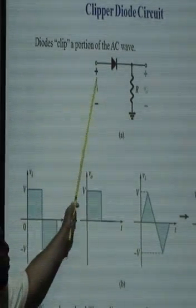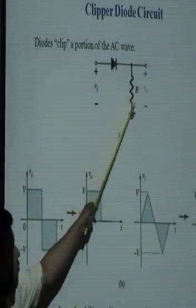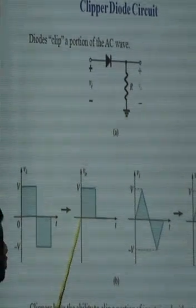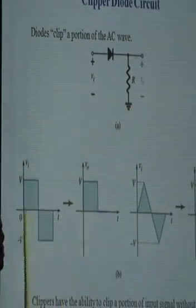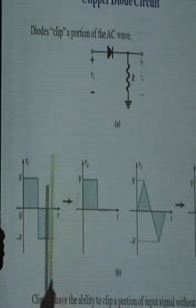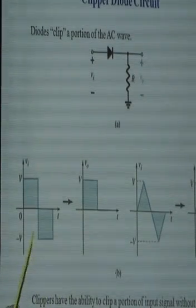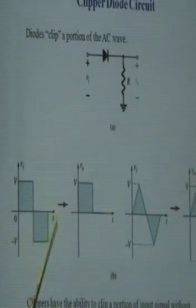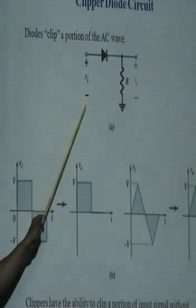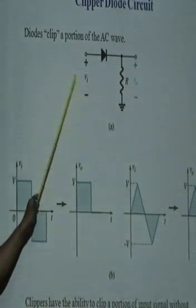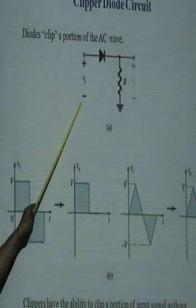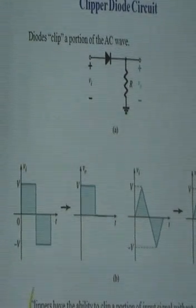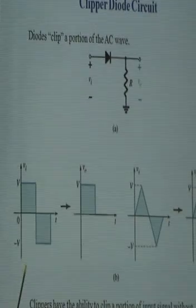For the positive half, the waveform that appears across the load resistance is the same as the input from 0 to π — whatever is applied at the input terminal. Now for the negative half portion from π to 2π, the polarity of the input terminal is changed — negative is now at the top and positive at the bottom. In that case, as per the specifications of the diode, it is reverse biased.